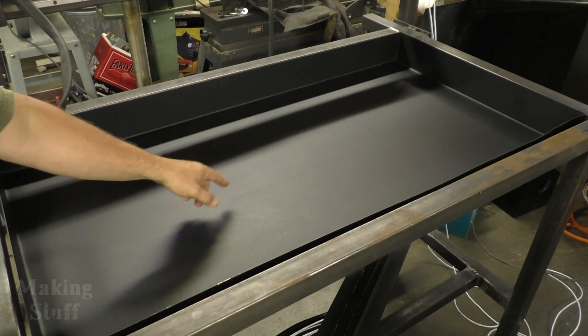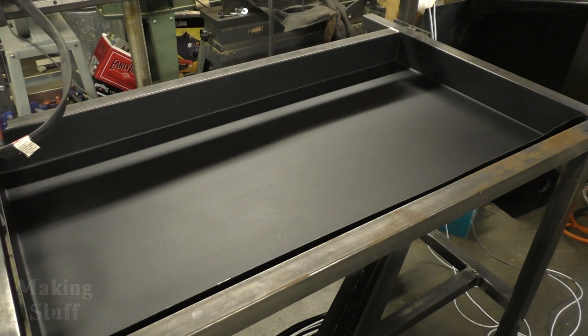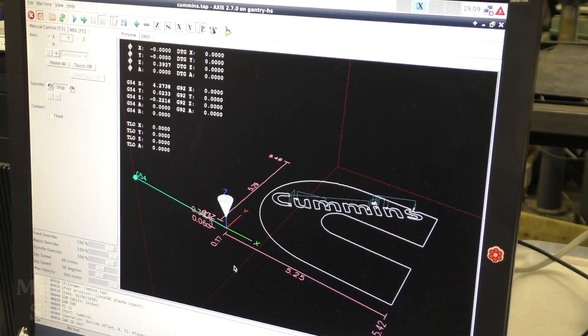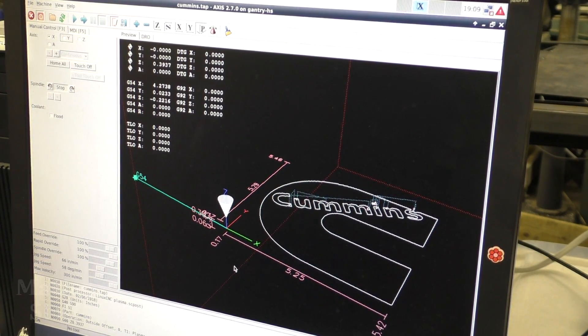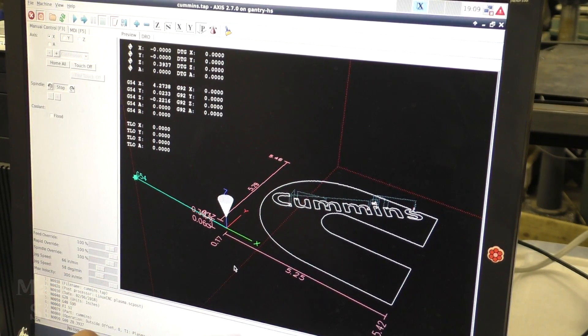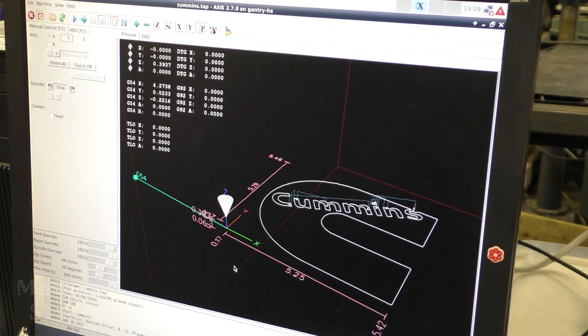I've got Linux CNC all set up for the first test cut, and I'm using the evaluation software of SheetCam right now. The only thing I could find that was small enough was this Cummins logo, so we're going to try and cut that out for our first cut. Let's see how it works.